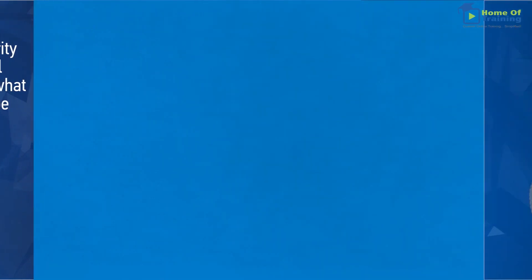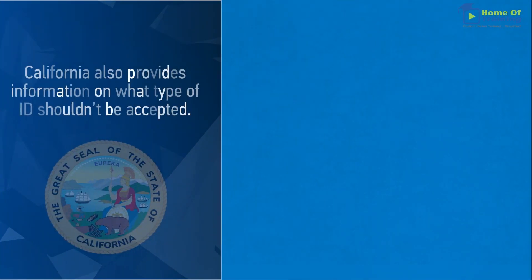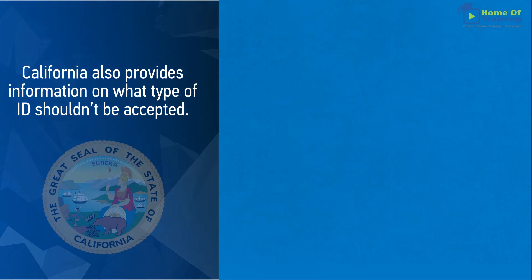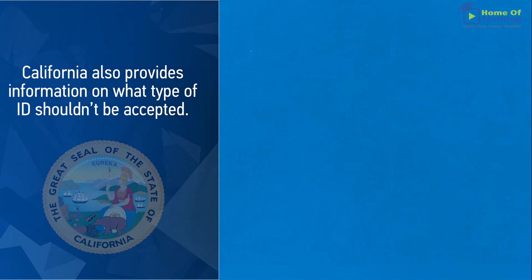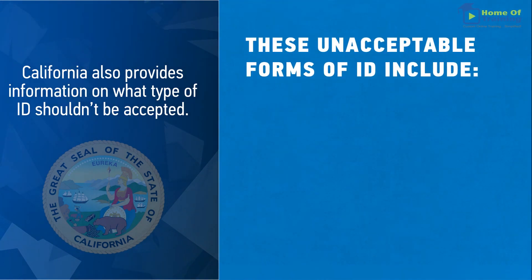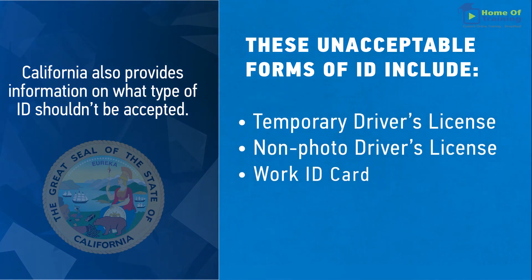California also provides information on what type of ID shouldn't be accepted. These unacceptable forms of ID include temporary driver's license, non-photo driver's license, and work ID card.